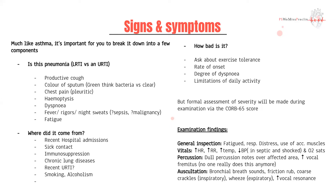Ask where the infection came from — have they been sick or in contact with someone sick? Any lung conditions or recent infections? Assess severity by asking about exercise tolerance: how far can they usually walk before feeling short of breath, and how far can they walk now? Also consider rate of onset, as a sudden onset is more debilitating, and how limited their daily activities are.